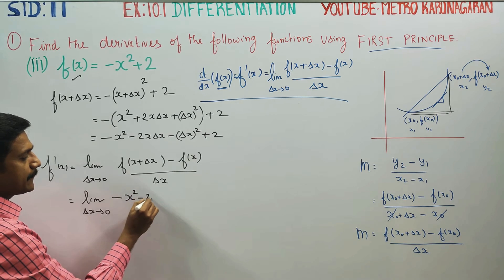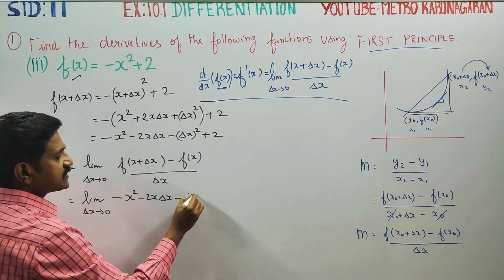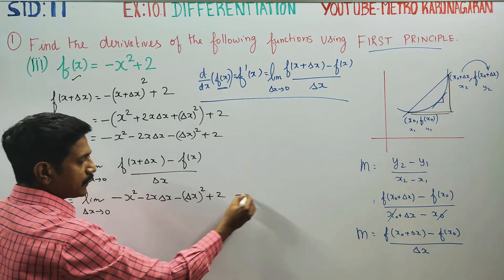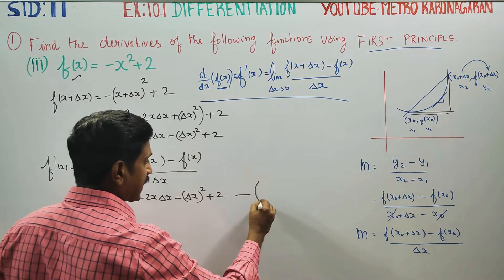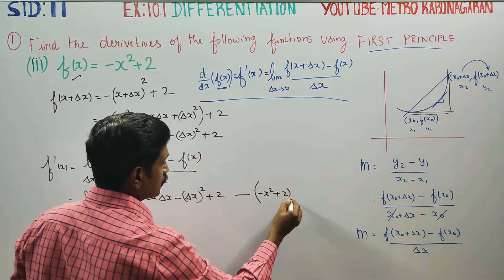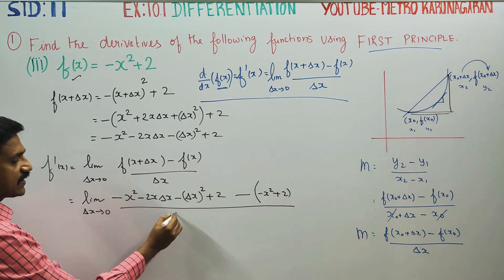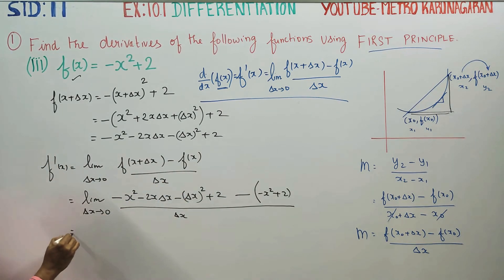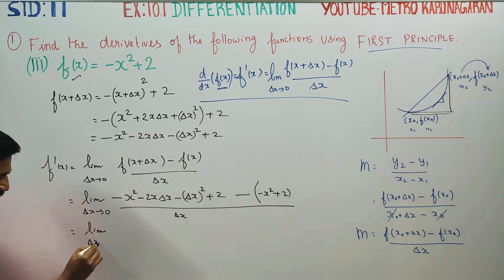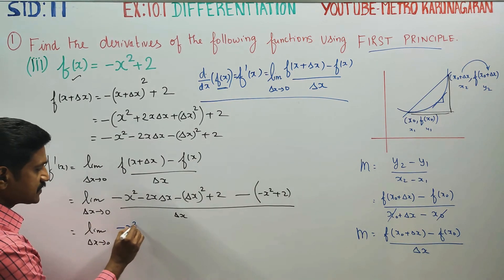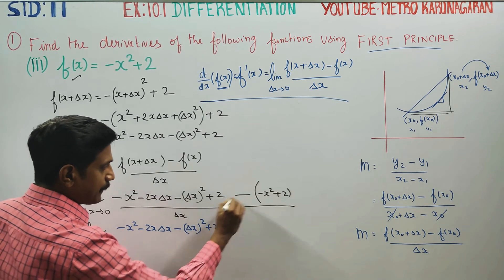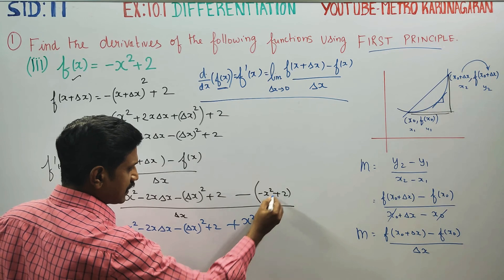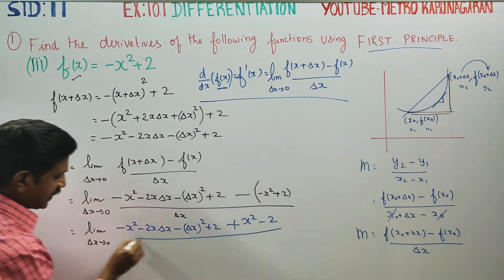Substituting: [-x² - 2x·delta x - delta x² + 2] minus f(x), all divided by delta x. f(x) = -x² + 2, so we write minus (-x² + 2), which gives +x² - 2 in the numerator, divided by delta x.